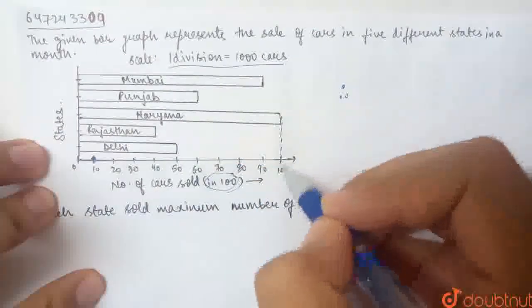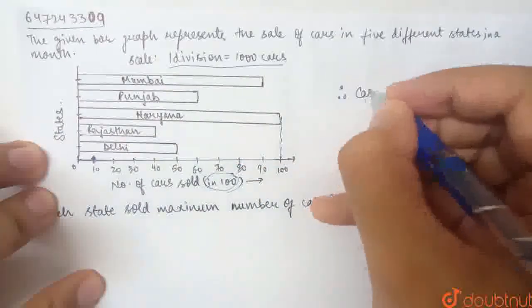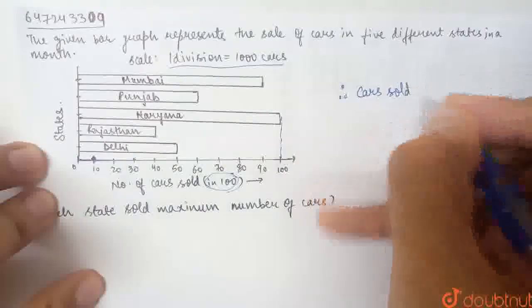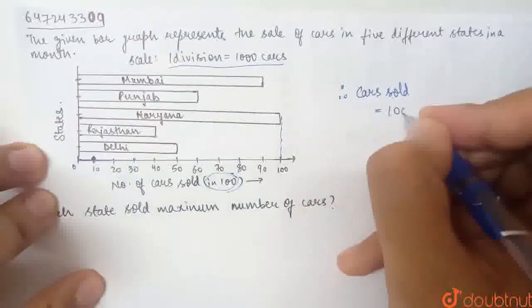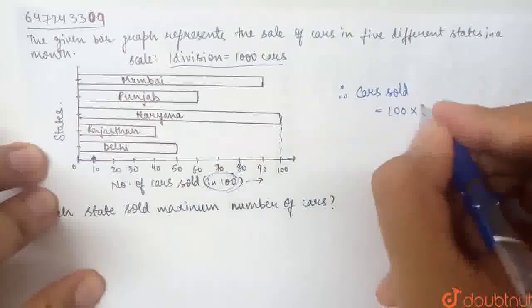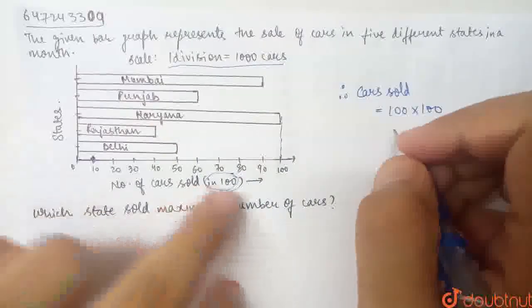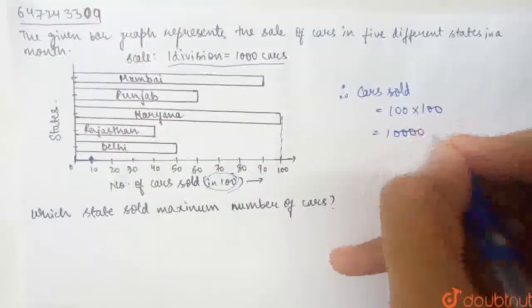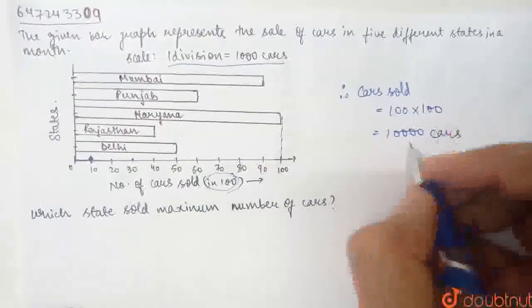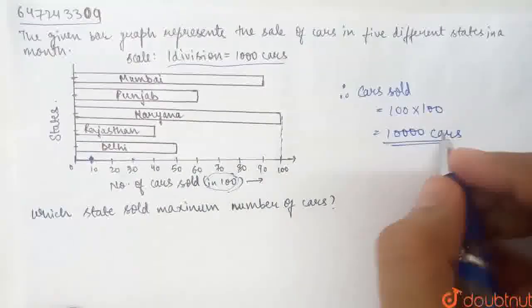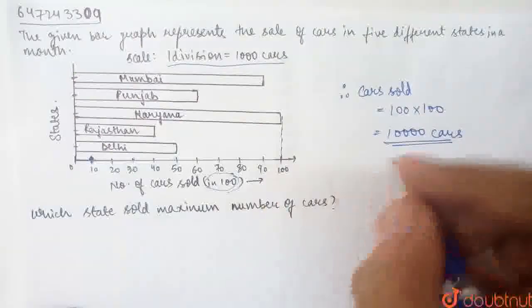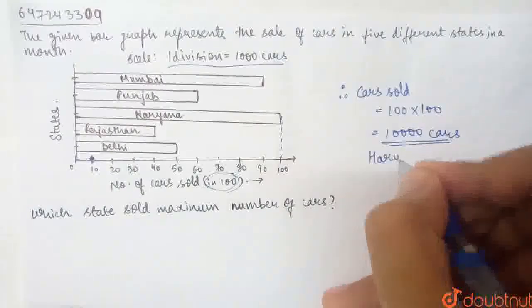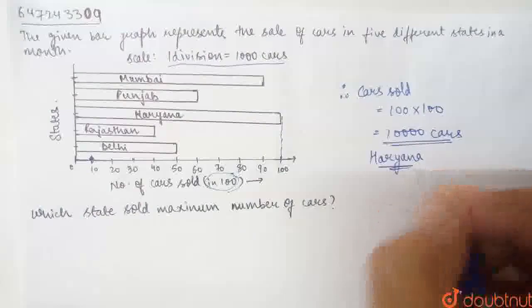So, in Haryana, what is the value here? We have 100. The cars sold is equal to 100 into these 100s. So what will it be? 10,000 cars. 10,000 cars is the maximum cars sold. And we have to ask which state sold the maximum number of cars? Here, Haryana sold these many cars.